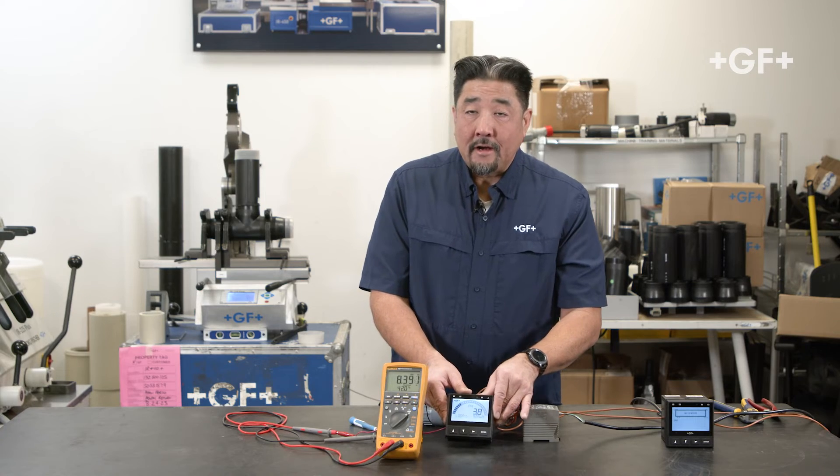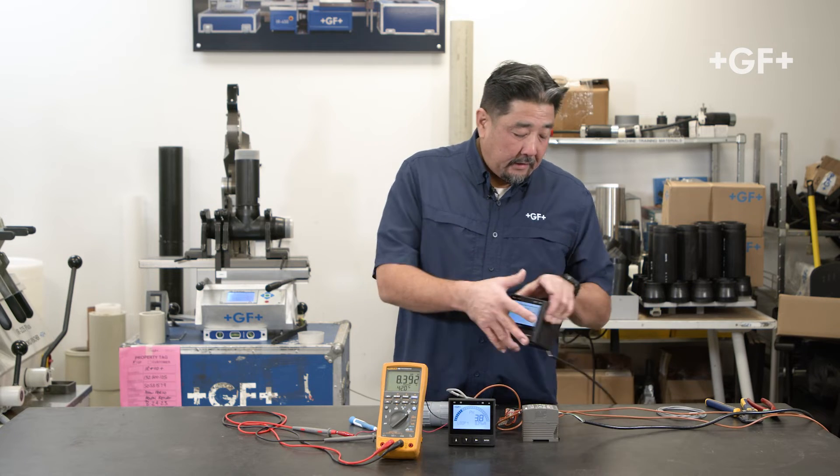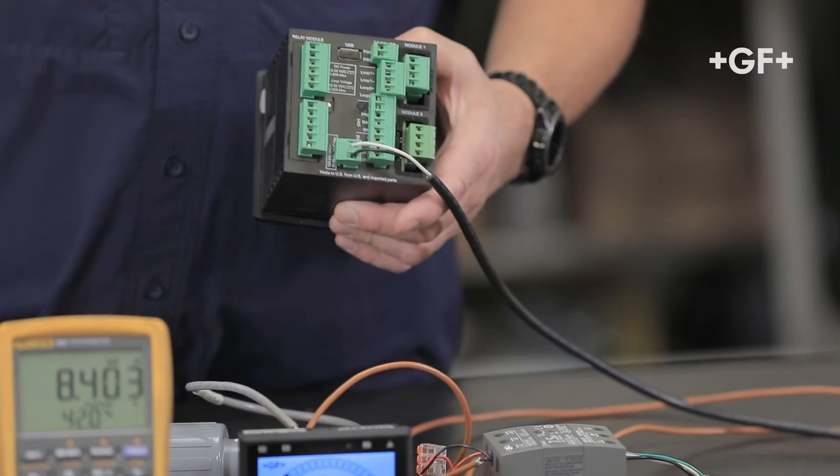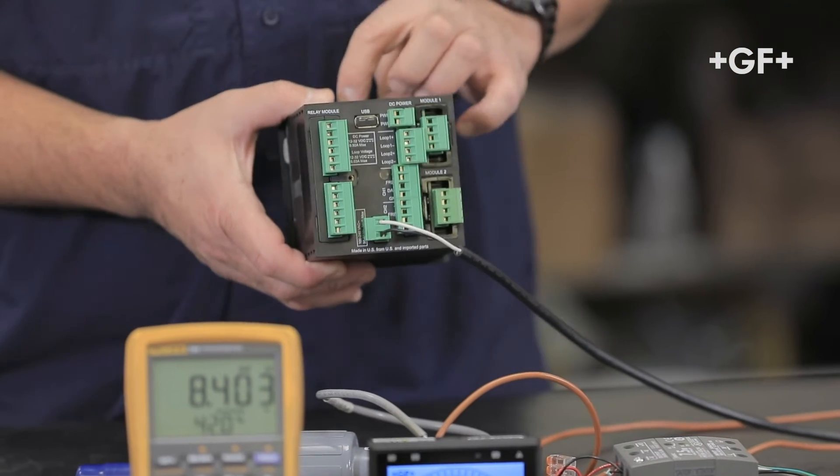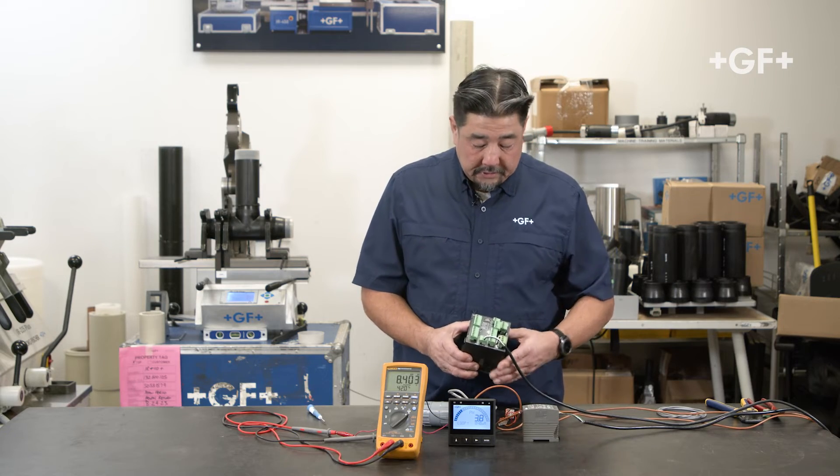Well, that's wiring the 9900. Let's look at the 9950. The 9950 can be powered either by 24 volt DC or 120 volts AC. In this demonstration we'll use the AC power and we'll bring in external voltage from our power supply to power the loop. Let's get started.